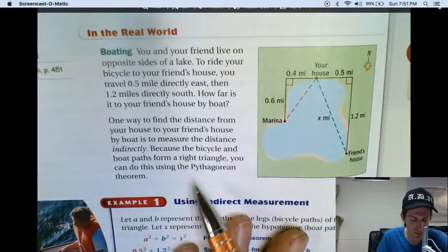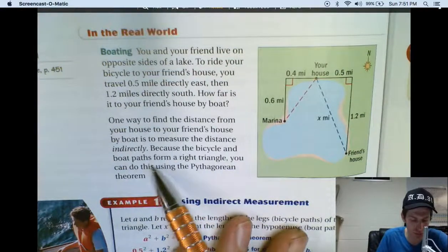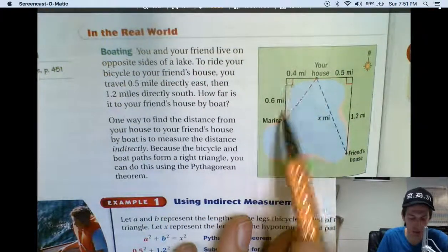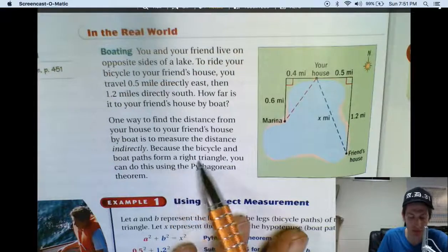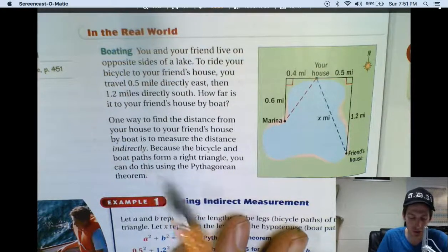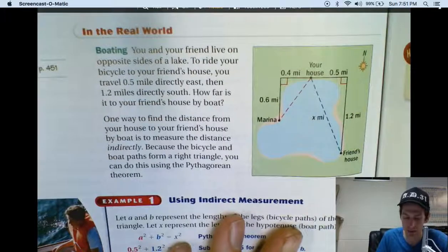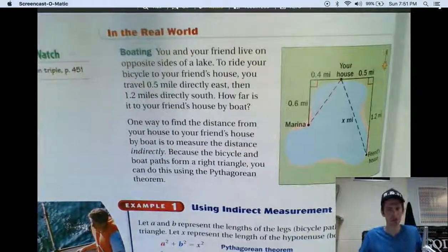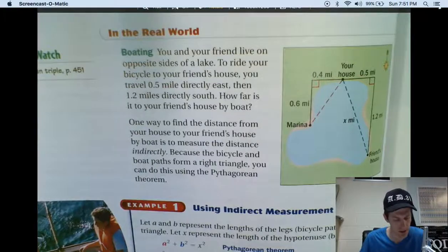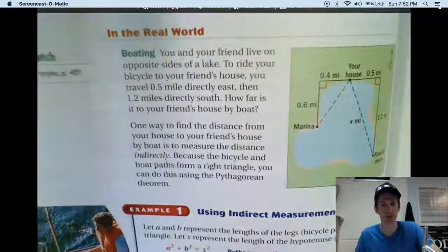You can figure it out. You know that it takes you 0.4 miles down the road, and then 0.6 miles down this road to get to the marina. So you could use the Pythagorean theorem to do a squared plus b squared, and then find the square root of that to give you c, which would be the distance from your house to the marina. That's called an indirect measurement. Now this is saying here, because the bicycle and boat paths form a right triangle, you can do this using the Pythagorean theorem.